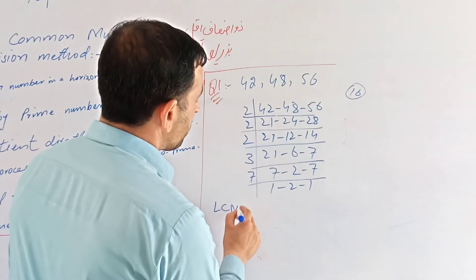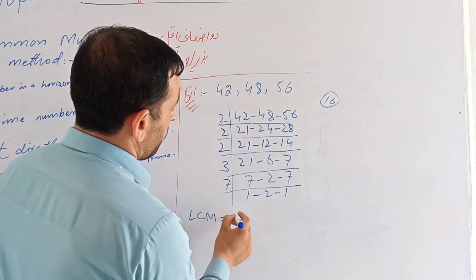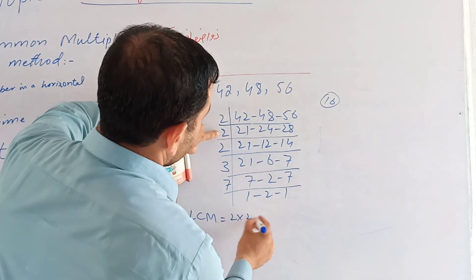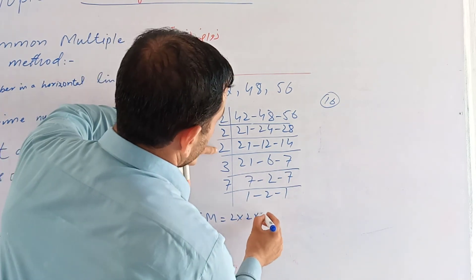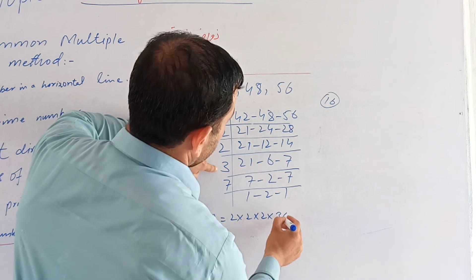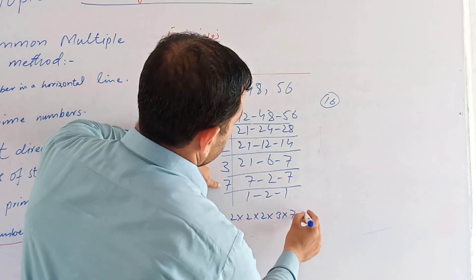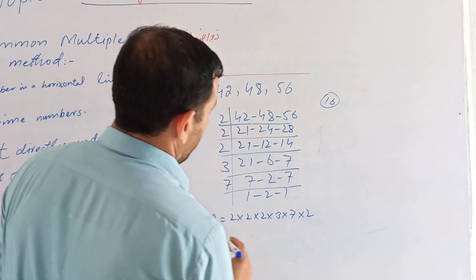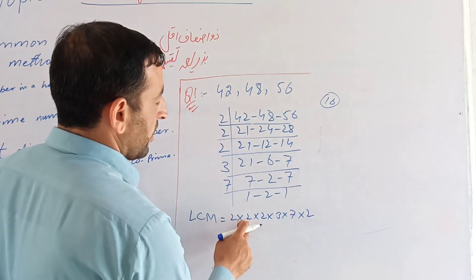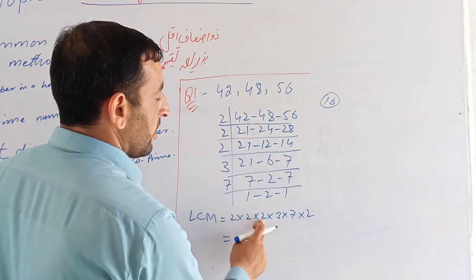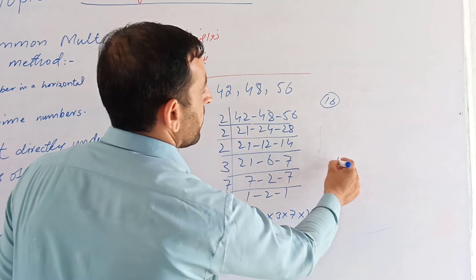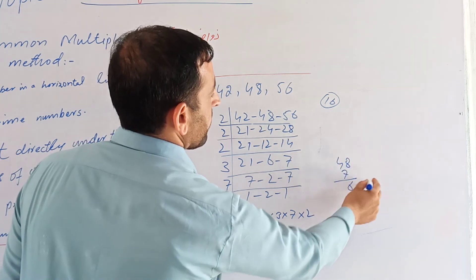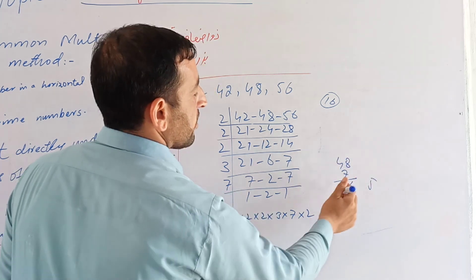LCM is found by multiplying the prime numbers together. Multiply 2 times 2 times 2 times 3 times 7. So: 2 times 2 is 4; 4 times 2 is 8; 8 times 3 is 24; 24 times 2 is 48; and 48 times 7 gives 336. The LCM of 42, 48, and 56 is 336.